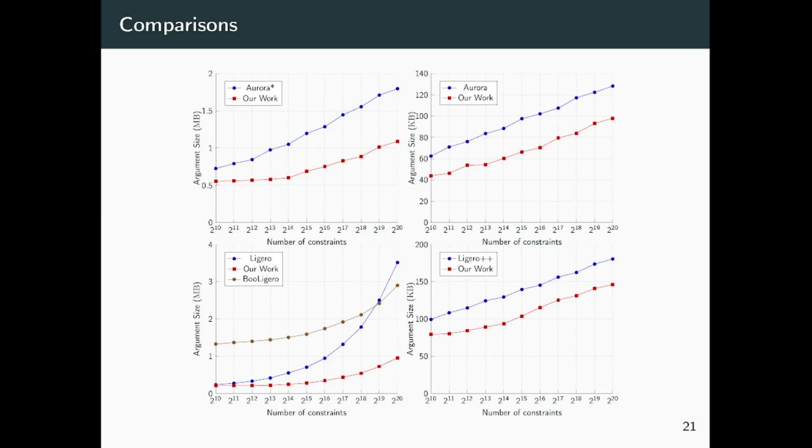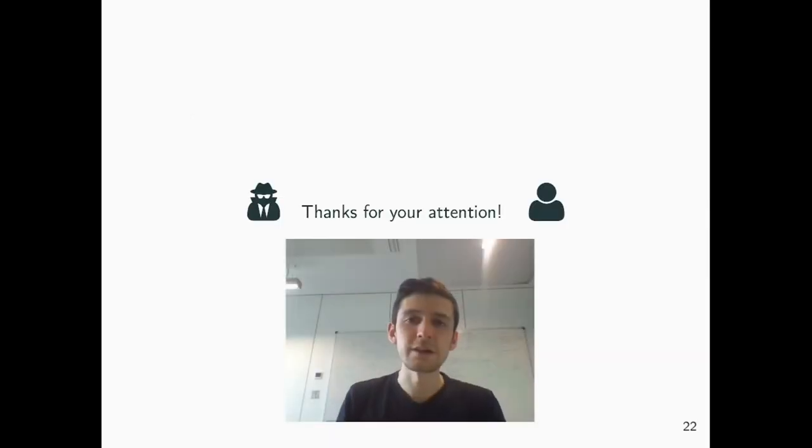Moreover, we also compare with BooLigero, that is a work that appeared in Financial Crypto 2021, which also attempts to improve Ligero by embedding more bits into the larger field. However, their construction uses an embedding that is asymptotically less efficient than our embedding, essentially our Reverse Multiplication-Friendly Embedding. So, that's it. Thanks for watching and thanks for your attention.